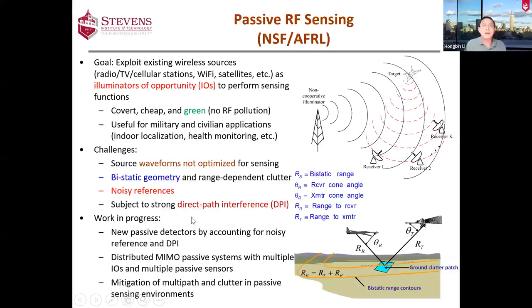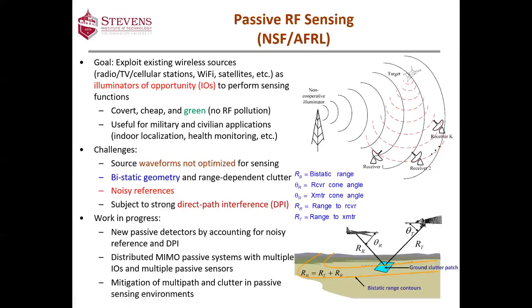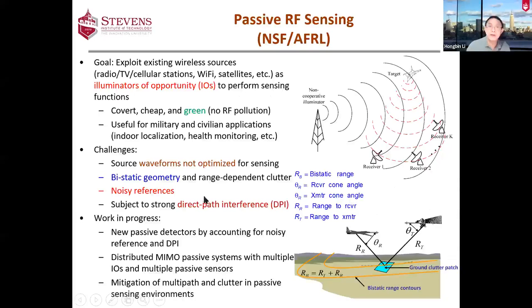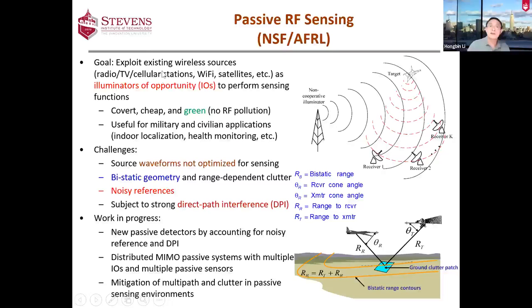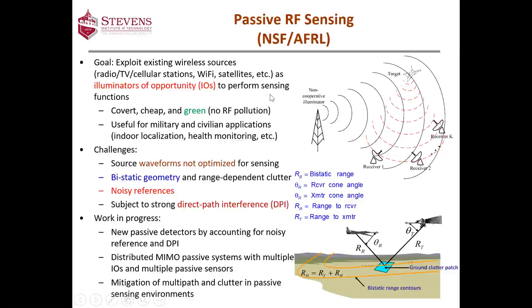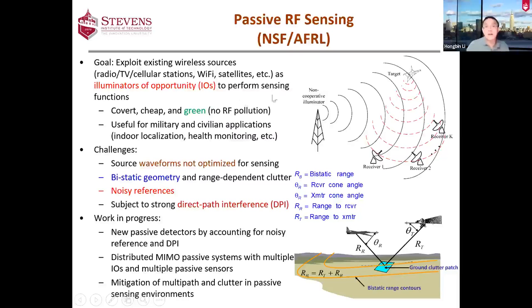The second topic we've been working on for some time is so-called passive RF sensing, funded jointly by NSF and AFRL. The issue is different from distributed RF sensing. Here, we're trying to perform sensing functions by exploiting existing wireless resources, such as radio and TV, cellular towers, Wi-Fi for indoor applications, and satellites. These are called illuminators of opportunity, or IOs.